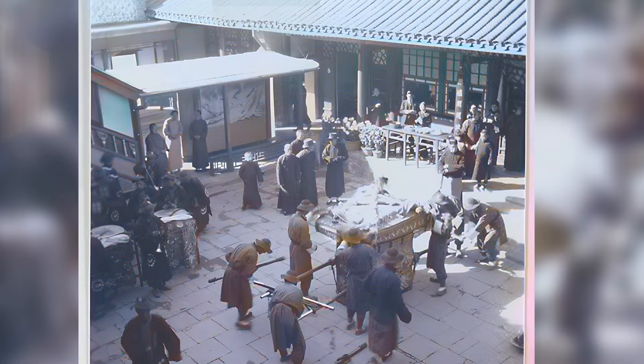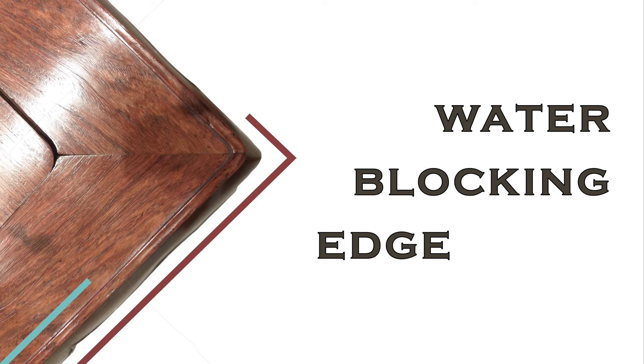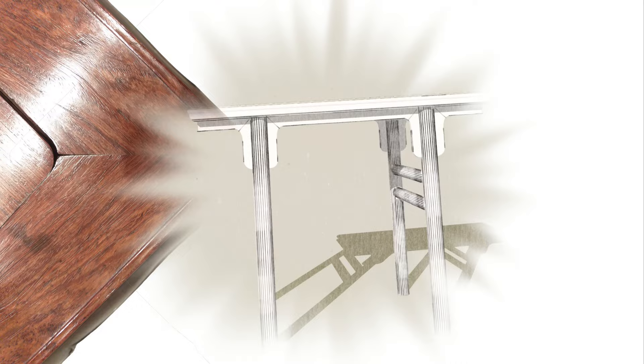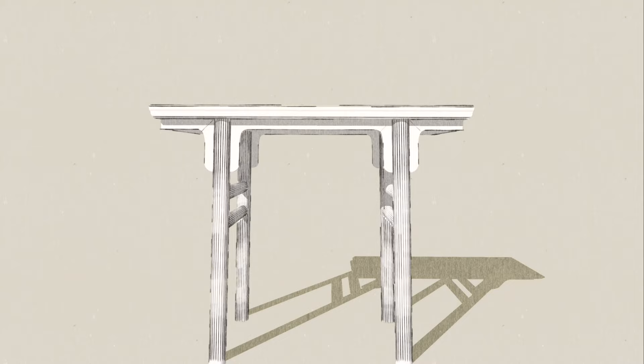Let's talk about features. Many of these tables, but not all, will have a bead running along the outer edge of the top surface. This serves to prevent spills from leaking onto the floor. This bead is called a lan shui xian, which means something to the effect of 'water blocking line,' and it's usually about three to four millimeters in height — or roughly one sixteenth to one eighth of an inch.